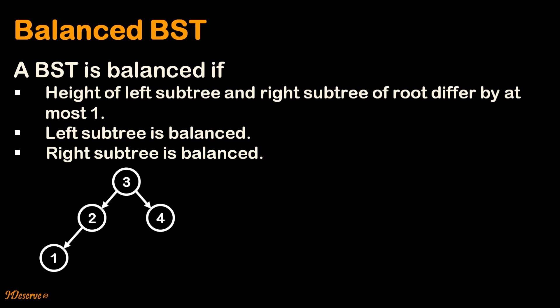Consider the following BST. Is this balanced? The height of the left subtree of the root is 2, and the height of the right subtree of the root is 1. So the difference is 1. The left subtree is balanced and the right subtree is balanced, so it meets all conditions and hence this BST is balanced.